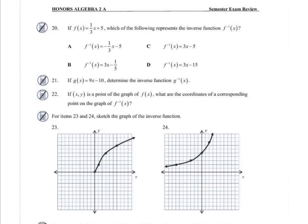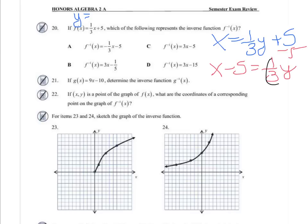So for 20, that's a multiple choice question. Which of the following is the inverse? This is y equals, so I'm going to switch my x and y, and solve for y. So we're going to subtract the 5, multiply both sides by 3. So that's going to be 3x minus 15, which is choice D.